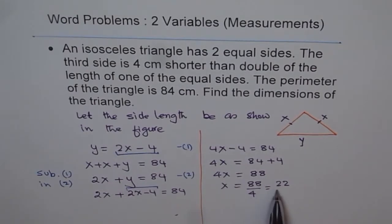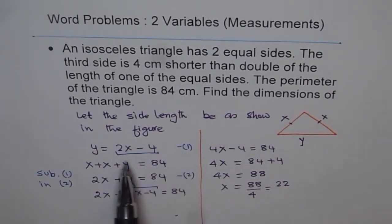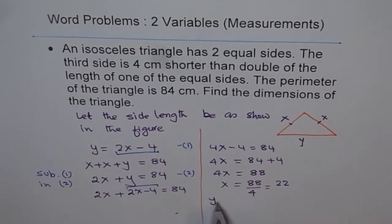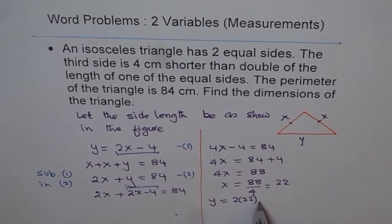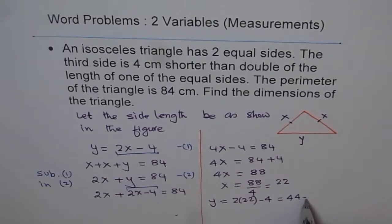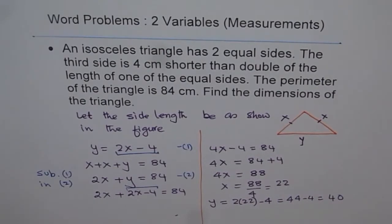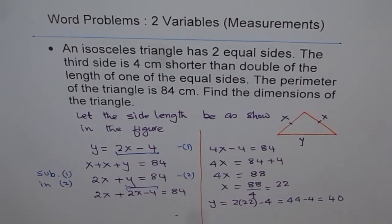Now since we know x, we can find y. Using equation 1, we write y equals 2 times x, which is 2 times 22 minus 4. That is 44 minus 4, which gives us 40. So we have both variables and can write our answer.